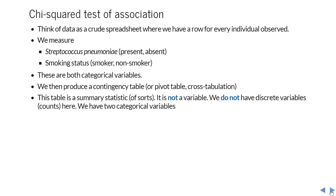The chi-squared test of association is used for one specific scenario. If you imagine you have a crude spreadsheet with one row of data for every individual observed, you are going to measure streptococcus pneumoniae—simply whether it was present or absent from a throat swab—and you are going to measure smoking status, whether or not they were smokers. Note that both of these are categorical variables—specifically nominal, because there is no ordering necessarily associated with either. You might at this point like to freeze the video and go have a look at that flow chart to see if this scenario gets you to recommending the chi-squared test of association.